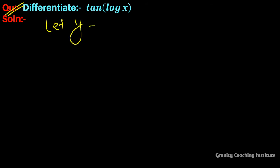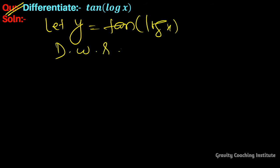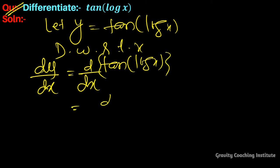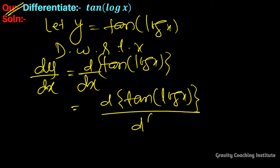Let y = tan(log x). Now differentiate with respect to x. So dy/dx equals the derivative of tan(log x), which by chain rule is the derivative of tan(log x) with respect to log x, multiplied by the derivative of log x.